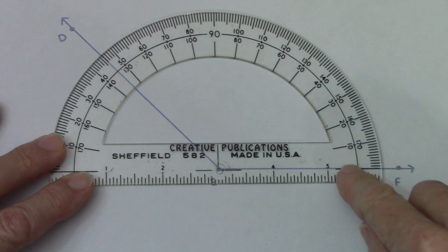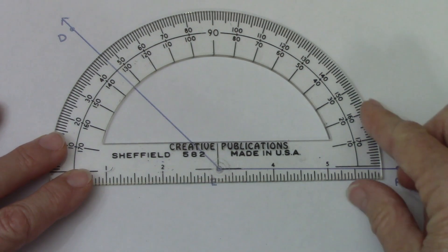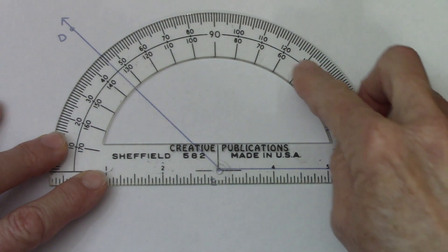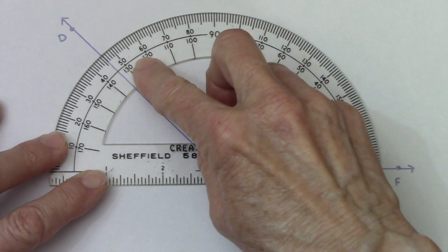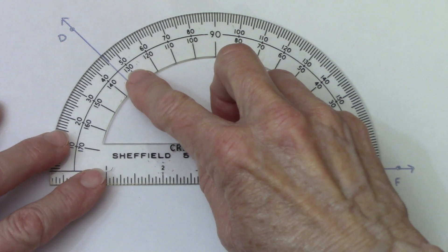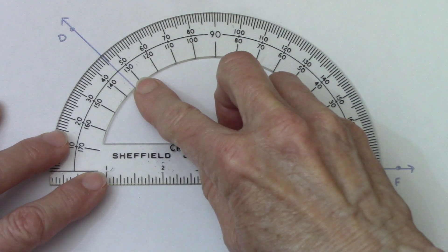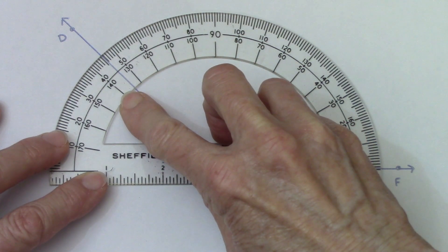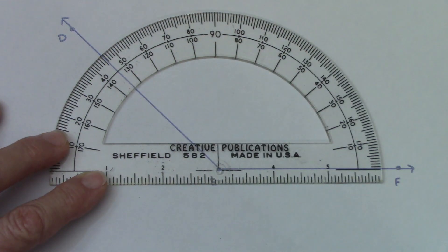Starts at zero. It's not written but it starts at zero and it goes all the way around. It comes over here and we see it's about halfway between the hundred and thirty and the hundred and forty. So we'll say that's a hundred and thirty five degrees.